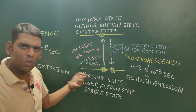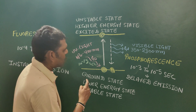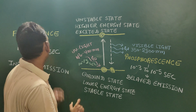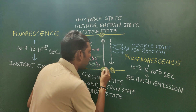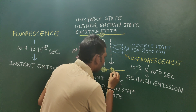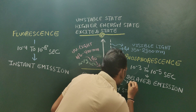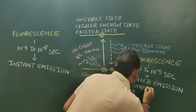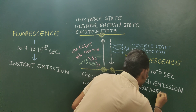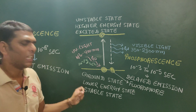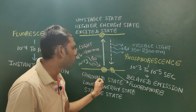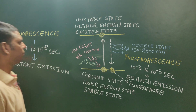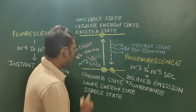The molecule or the group which is present in the molecule that shows the property of fluorescence and phosphorescence is termed as a fluorophore. A fluorophore is the molecule or group which is involved in processes like fluorescence and phosphorescence.